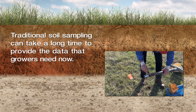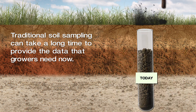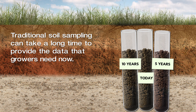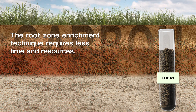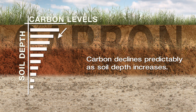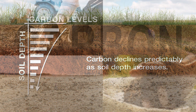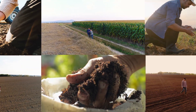Typically, carbon sequestration would involve determining carbon stock today and then again five or ten years later. With the root zone enrichment approach, researchers or private landowners can take an estimate of the carbon distribution in soil, calculate the root zone enrichment, and get a pretty good estimate of the carbon storage potential without the need for sampling over time.